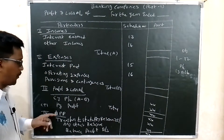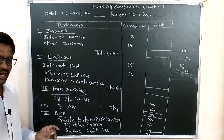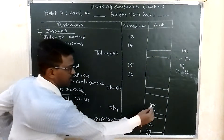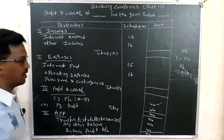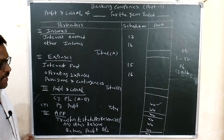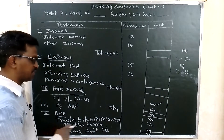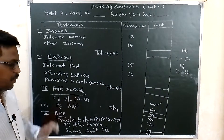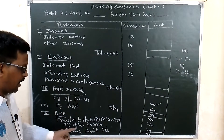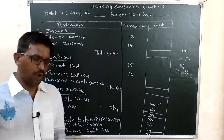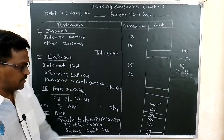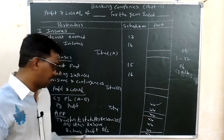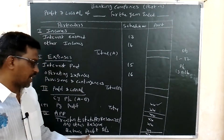Next is the appropriation section. From the current year profit, 25 percent is transferred to the statutory reserve. Any other reserve given in the problem is also deducted. The balance amount is then transferred to the balance sheet.